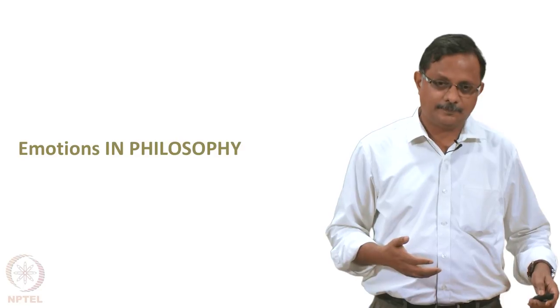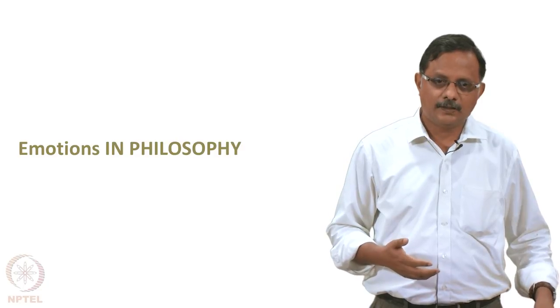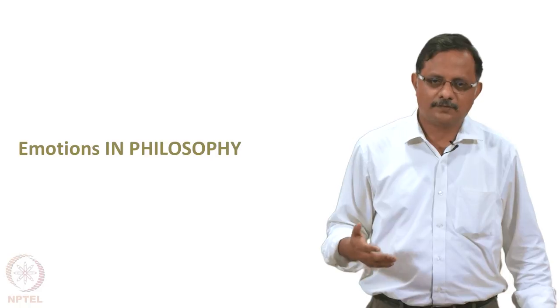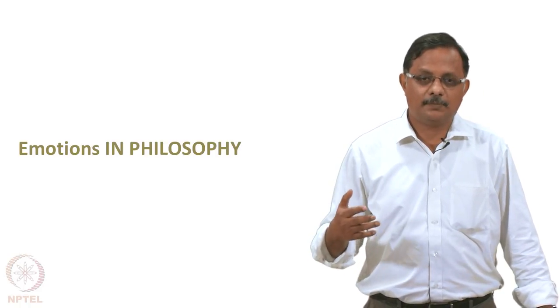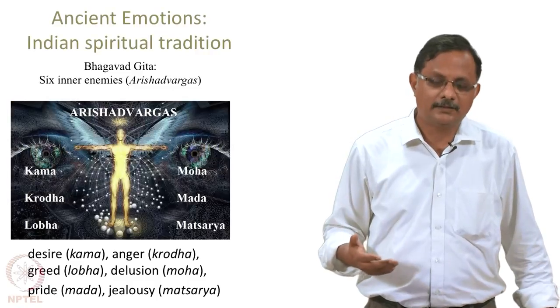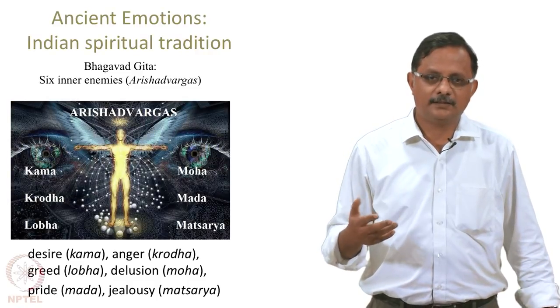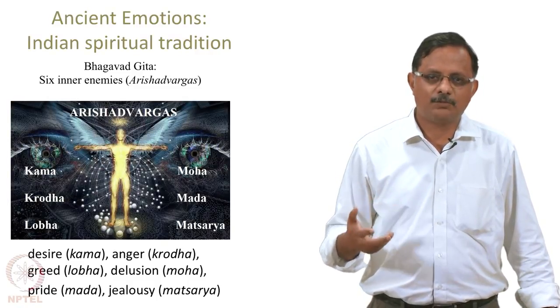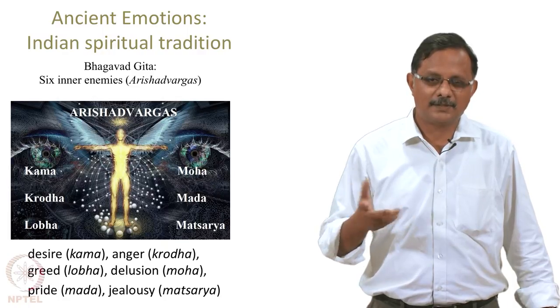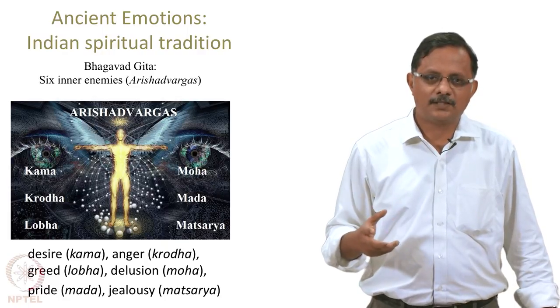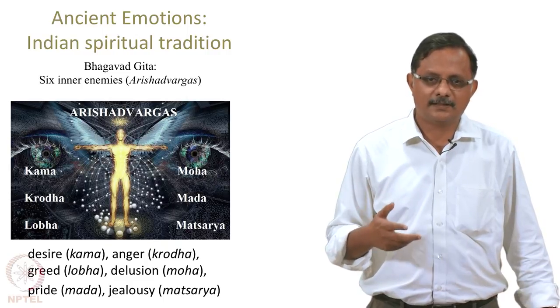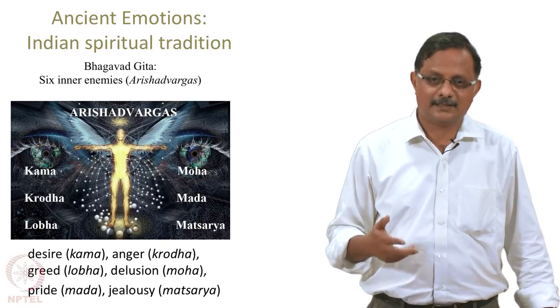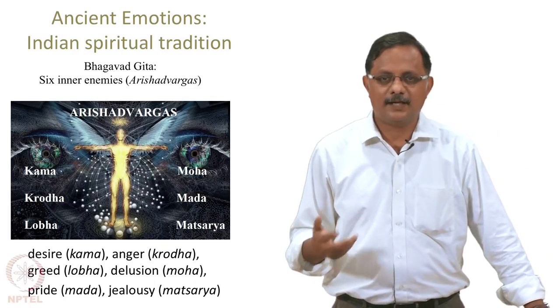Let us begin with philosophy — specifically Indian philosophy. In the Indian spiritual tradition, a lot has been said about emotions. Let us start with the Bhagavad Gita, which mentions six emotions described in negative terms. It calls them the six inner enemies — the Arishat Varga. 'Ari' means enemy, 'Shat' means six, and 'Varga' means class or type.